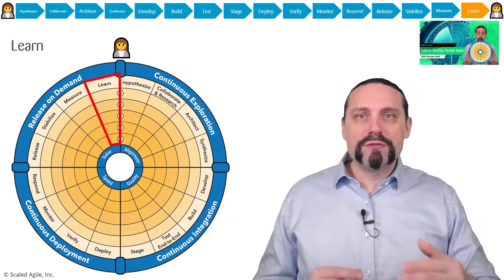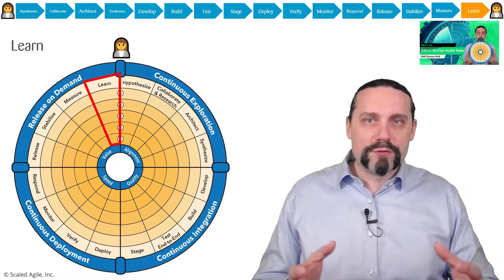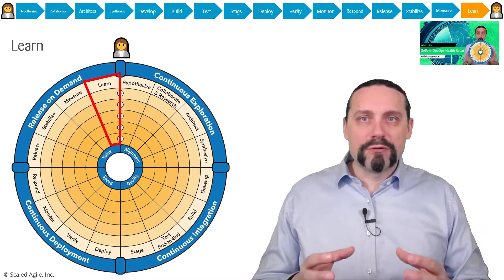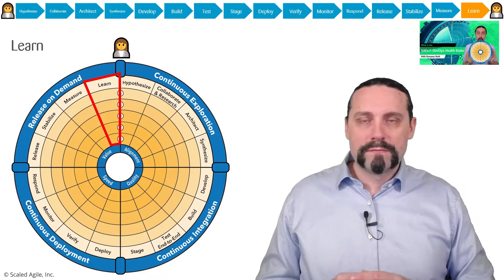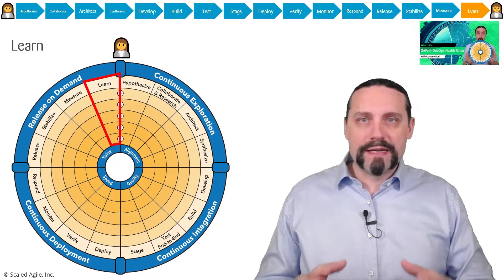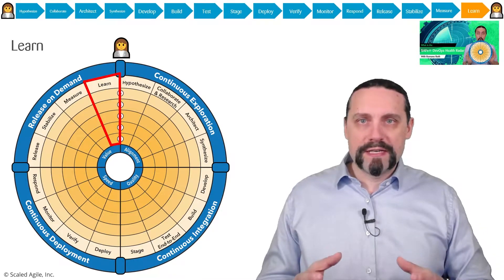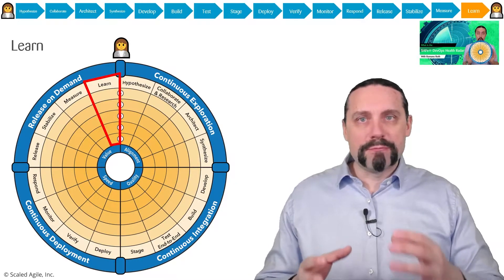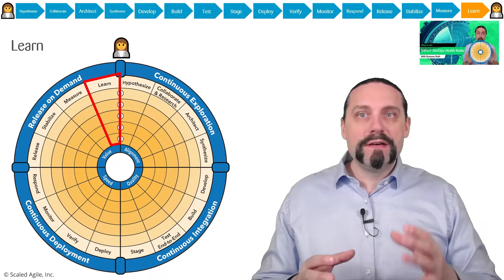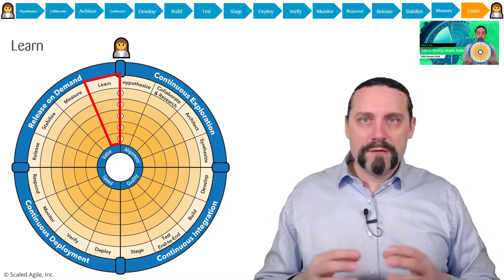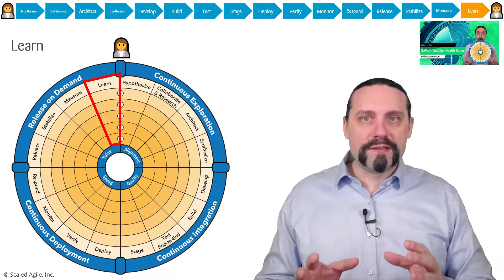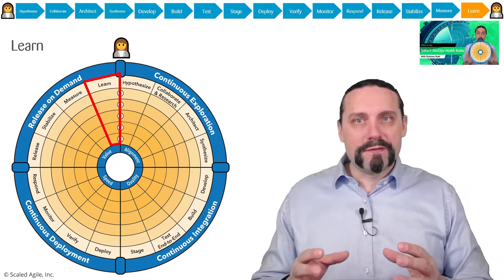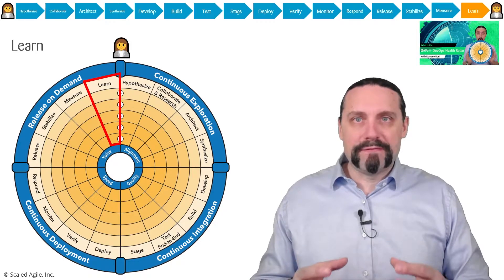We commit the code into the source code repository or version control, and then the build server creates a deployable artifact out of the code. The deployable artifact gets tested end-to-end and deployed to a staging environment for final verification. Then we deploy the deployable artifact into production with the feature toggle off, and verify with a subset of tests that everything is still okay.